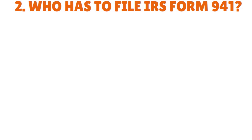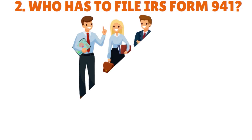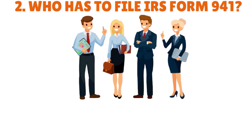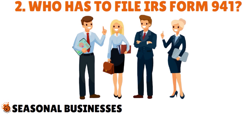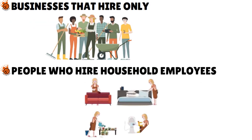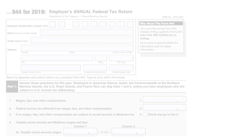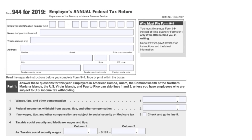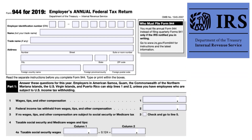Who has to file IRS Form 941? Most businesses with employees have to file Form 941 each quarter to report and calculate employment taxes. Only three types of businesses do not have to file: seasonal businesses during quarters when they haven't hired anyone, businesses that hire only farm workers, and people who hire household employees such as maids or nannies. If you predict you will pay $4,000 or less in wages in the coming calendar year, you may be able to submit annual Form 944 instead. However, you first have to contact the IRS and get permission to file Form 944 instead of Form 941.